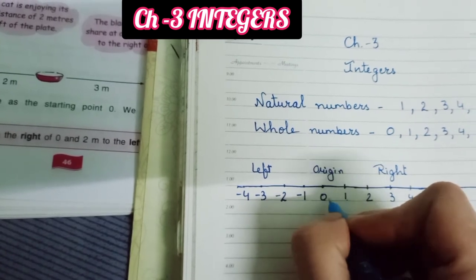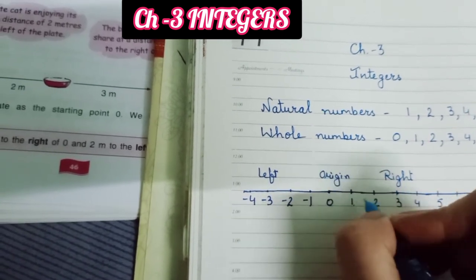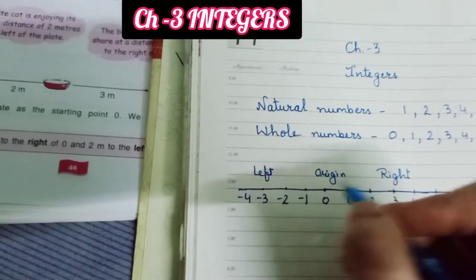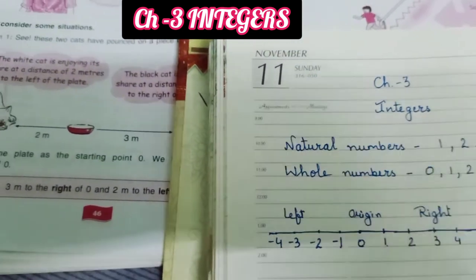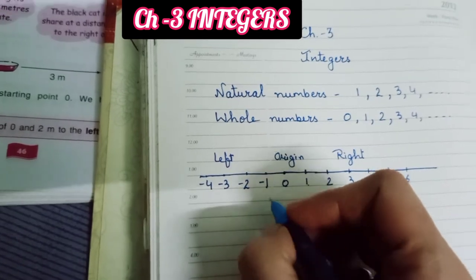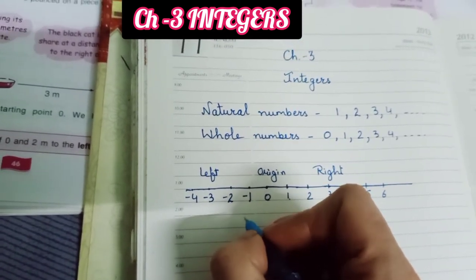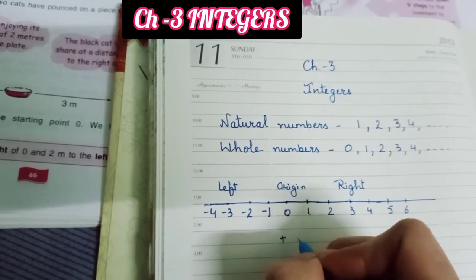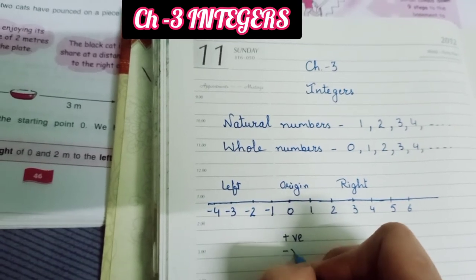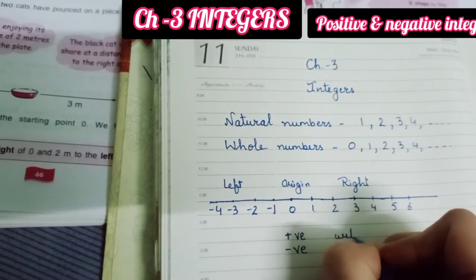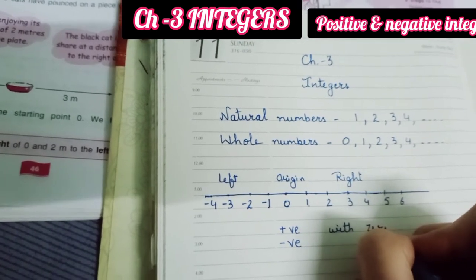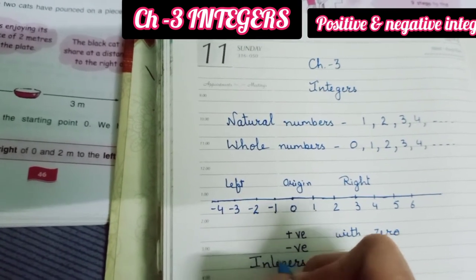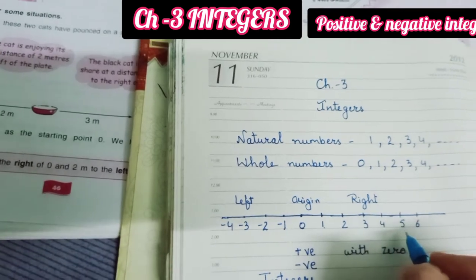So on the number line: 0 is the origin, 1 is on the right, minus 1 is on the left, 2 is on the right, minus 2 is on the left. The numbers which are positive as well as negative, together with 0, are called the integers.